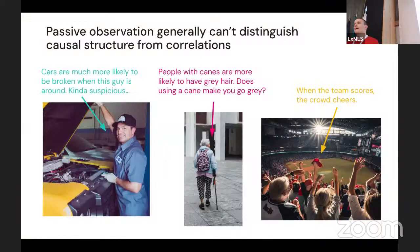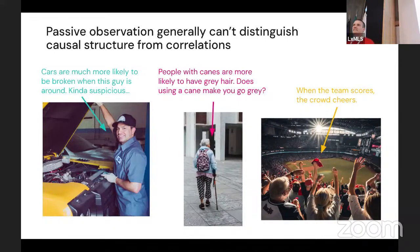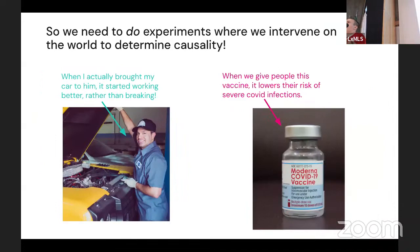I want to start with the observation that passive observation generally can't distinguish between causal structure and just correlations. You might notice that when a certain person is around, cars are more likely to be broken, but you don't know which way the causal arrow is going. People with canes are more likely to have gray hair, but that doesn't mean having a cane makes you go gray, or that a crowd cheers when the team scores. What we need to do as scientists is to do experiments where we actually intervene on the world — like bringing a car to the mechanic, or giving people a vaccine and seeing how it affects their health outcomes.